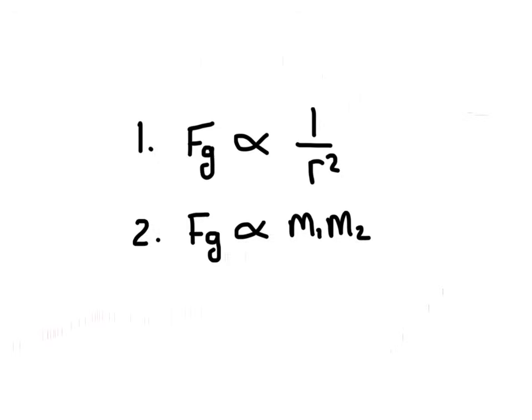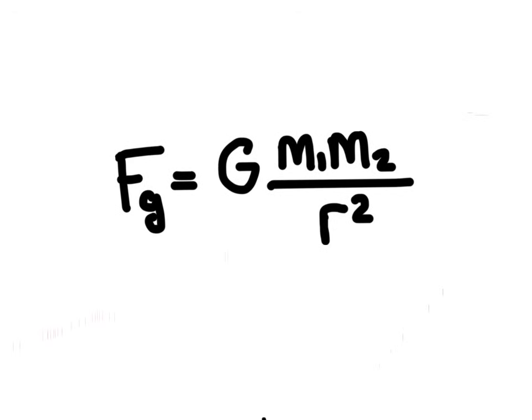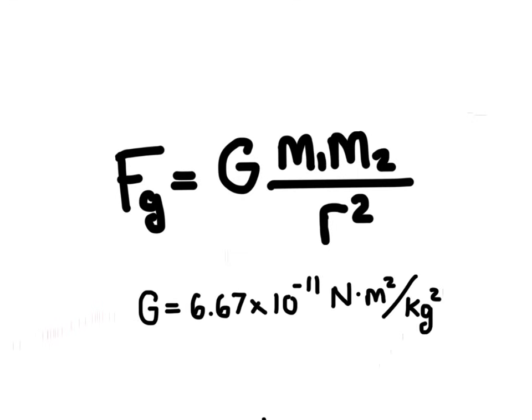Now, these two things go together to form this equation right here. We have our masses on top over the distance squared, and we had to add this thing in here. It's called the universal gravitational constant. Newton didn't discover this number right here, but this is what that constant is equal to.